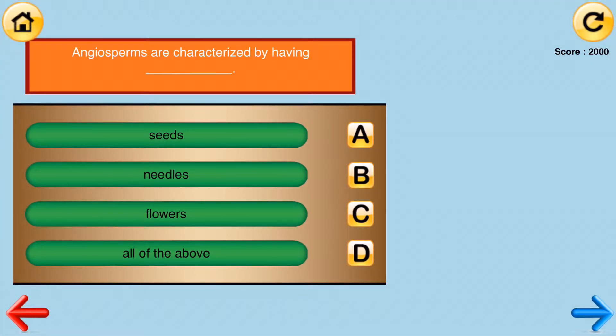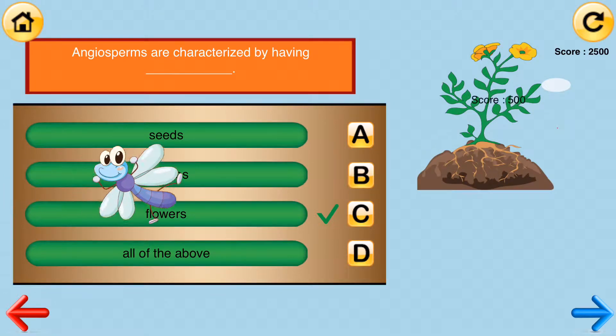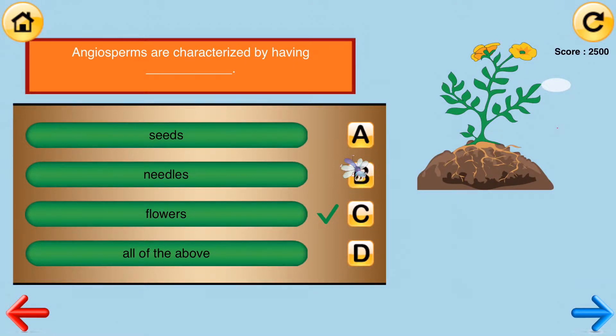Angiosperms are characterized by having blank. Seeds, needles, flowers, all of the above. Flowers.